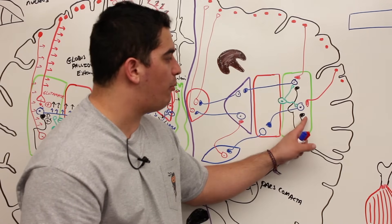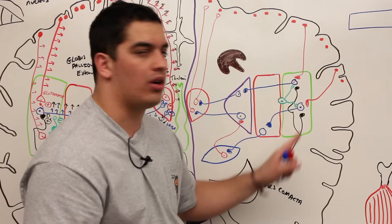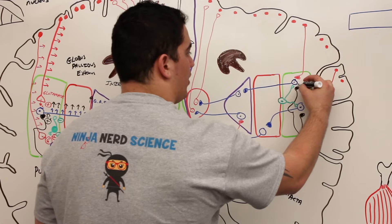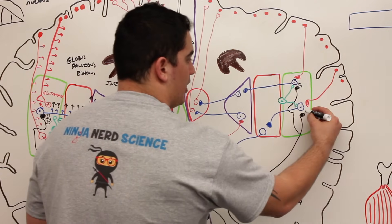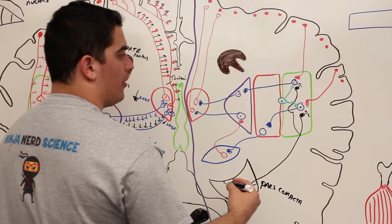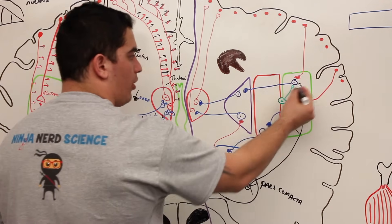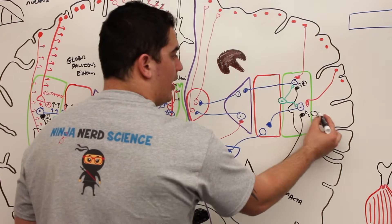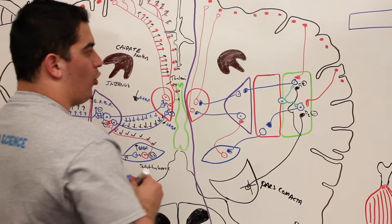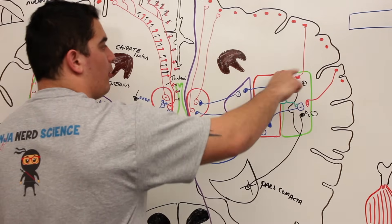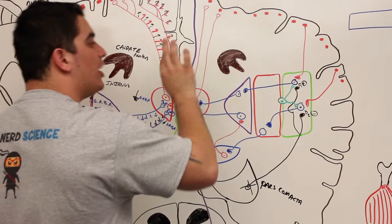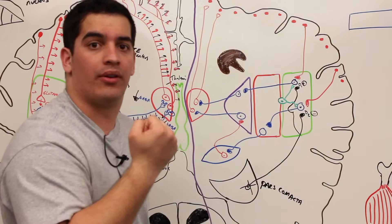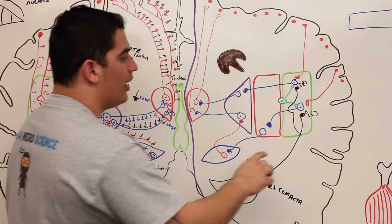If these neurons are damaged, what happens to the dopamine release onto these GABAergic neurons? It's going to decrease. Remember, the D1 receptor goes through the direct pathway and the D2 goes through the indirect pathway. D1 loves to stimulate, D2 loves to inhibit — and that normally helped to enhance movement through the direct pathway and regulate inhibitory movement in the indirect pathway.